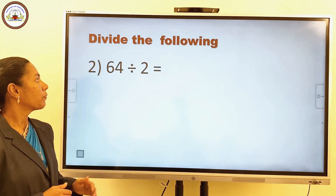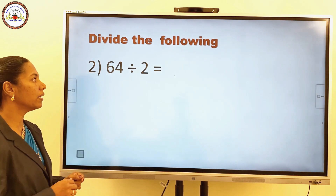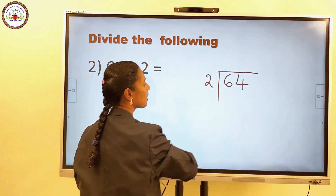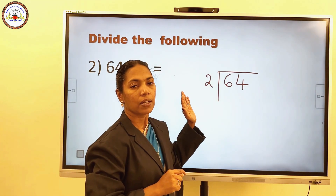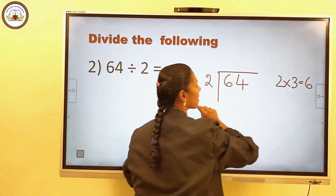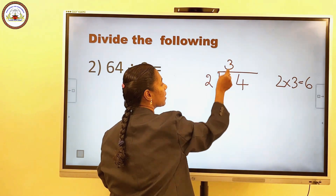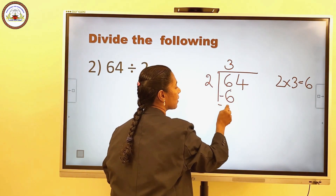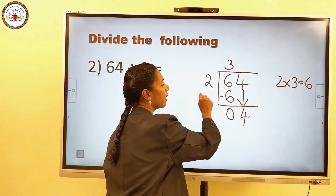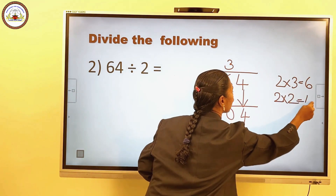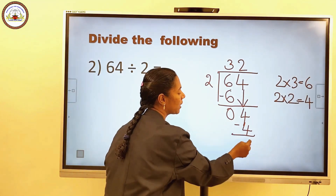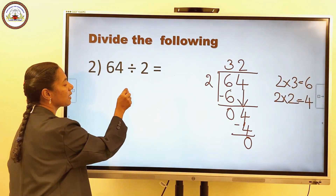Divide the following: 64 divided by 2. Using the long division method, write 64 here and 2 outside. 6 divided by 2: from the multiplication table of 2, 2 into 3 is equal to 6, so write 3 here. 6 minus 6 is 0. Now bring down 4. From the table of 2, 2 into 2 is equal to 4, so write 2 here. 4 minus 4 is 0. The answer is 32.